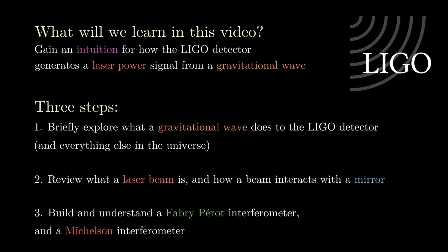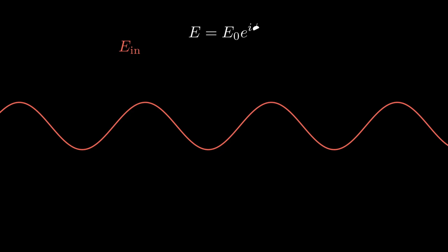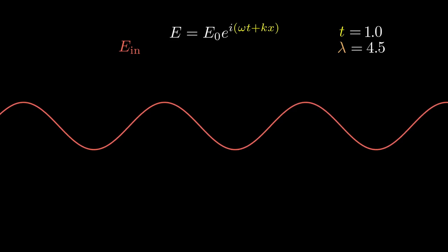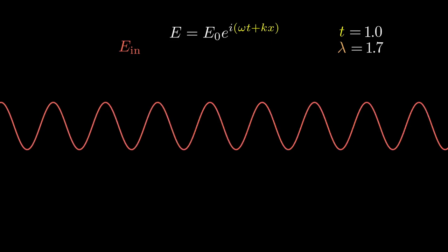So now we know that gravitational waves will produce length changes inside of our detector. We'll now move on to review what a laser beam is and how it interacts with a mirror. First, we'll create a laser beam. In our case, the laser beam is very simple. It's just a sine wave with a certain amount of phase called phi. We can evolve this phase with time. The phase of our sine wave also depends on the wavelength lambda, which we can change to make longer or shorter.